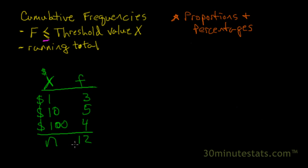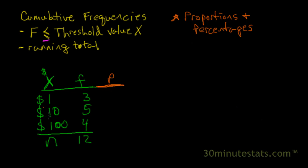We've got our data set that we used in the previous video, where we've got the frequency of goods sold items that we sold out of our store. These items cost either $1, $10, or $100, and we sold 12 items total. We've got the frequency distribution here, and I'll go ahead and start by calculating the proportion for each of these values of x, where x is goods sold.